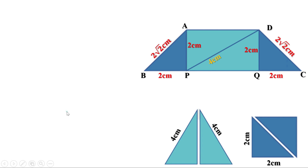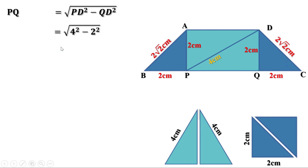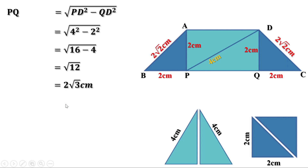Therefore PQ equals root of PD squared minus QD squared. PD is 4 and QD is 2, so this is root of 4 squared minus 2 squared, which is root of 16 minus 4, equals root of 12. Now 12 equals 4 into 3, so root 12 equals root of 4 into 3, which equals root 4 into root 3. Root 4 is 2, so this is 2 into root 3, or 2 root 3. Therefore the length of PQ is 2 root 3 centimeters.